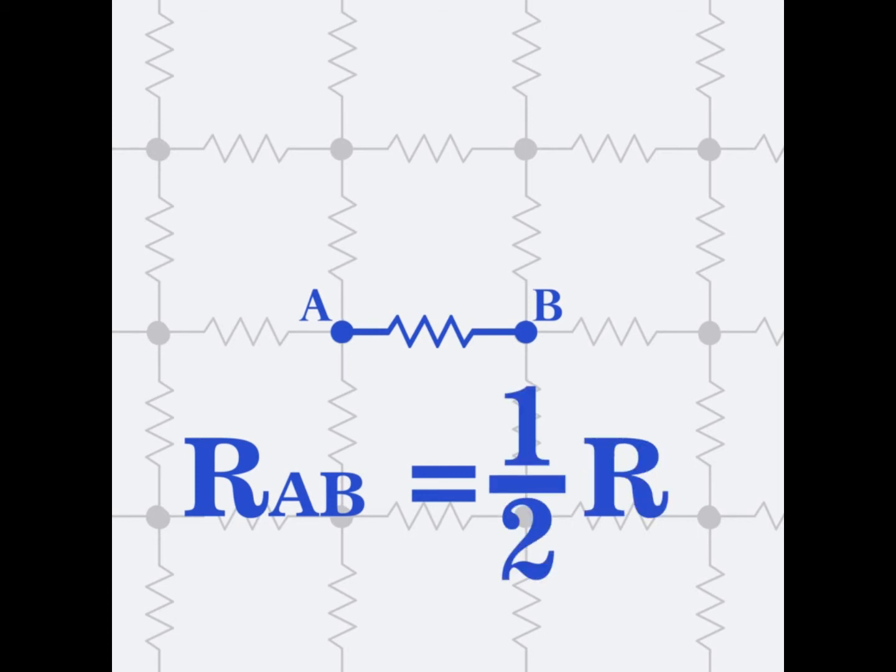Now, the resistance between the nodes A and B of R is one half R. Trying to find an equation for this circuit is impractical. We need to look for an alternative approach.